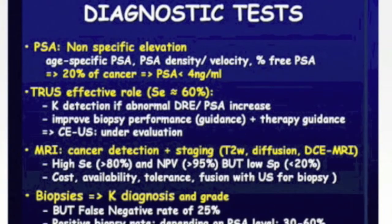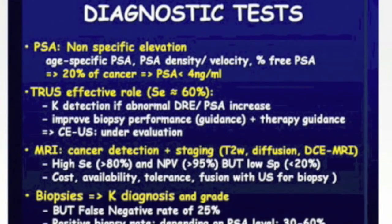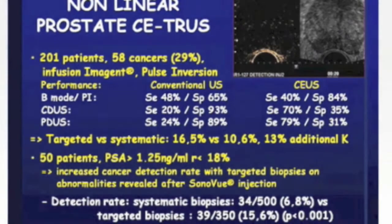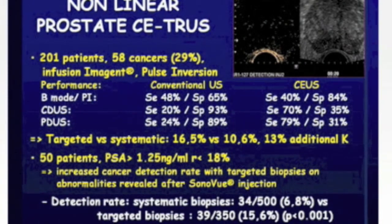MRI is probably one of the most interesting approaches, combining T2-weighted examination, diffusion imaging, and dynamic contrast-enhanced MRI. However, its specificity for cancer detection is very low — below 20%. Biopsies are the most performed diagnostic test and the only one providing cancer diagnosis and grade, but the false negative rate is about 25%. Improving biopsy guidance toward the most abnormal territories — likely the cancer area — is therefore a key issue.